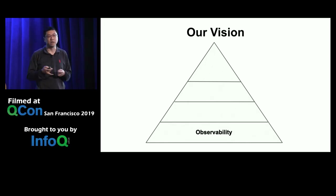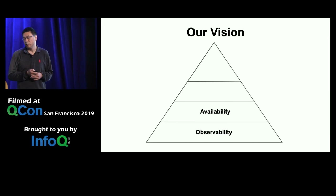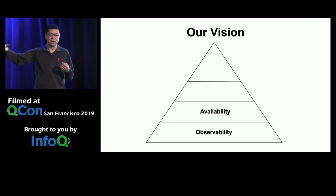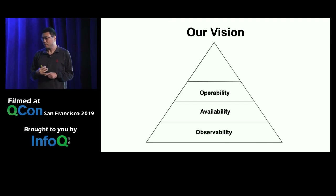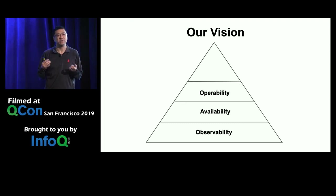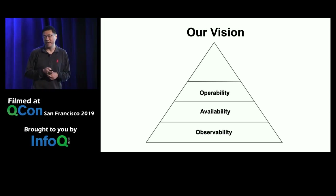Once you have achieved observability, the next step is availability — you want your product to be available and reliable to your users most of the time. For our streaming data infrastructure, that means making sure data keeps flowing end-to-end without interruption. Once you have achieved availability, you should look into operability. Having a great product doesn't mean you have to be burned out by operations. For most issues, you should have simple and repeatable processes to deal with them, and most operations should be automated. At Netflix, our streaming data infrastructure handles about 1,000 streams and data pipelines, so without operability things would be totally untenable.